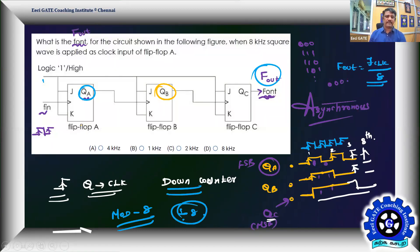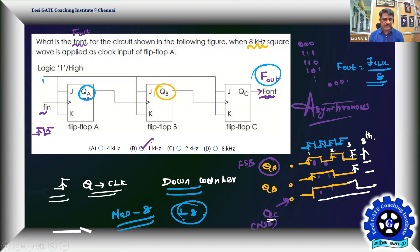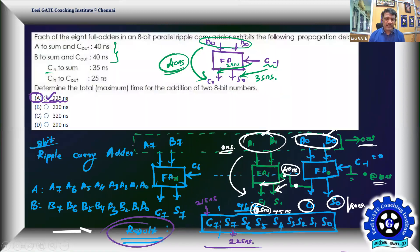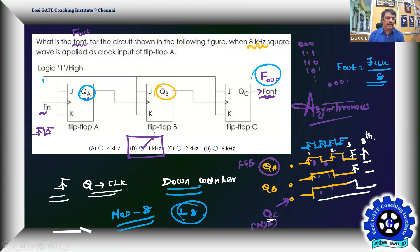The answer is 1 kHz. Be careful not to make a last-minute error: 8 kHz divided by 8 equals 1 kHz. Two interesting problems covered: one on full adder combination logic and arithmetic propagation delay, and one on sequential logic using a three-bit asynchronous down counter. Knowing that positive-edge triggered flip-flops with Q driving the subsequent clock gives a down counter is the key prerequisite.